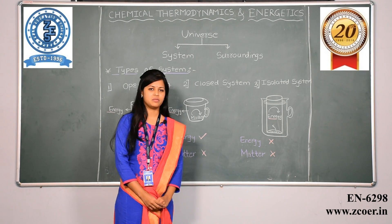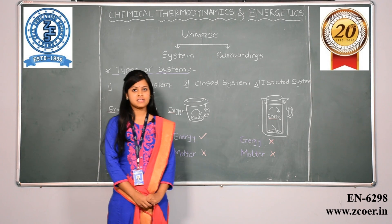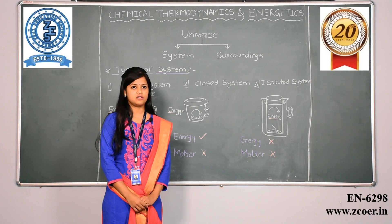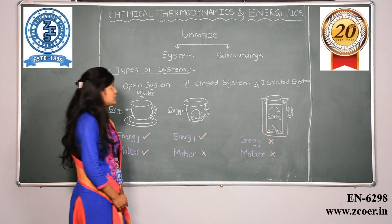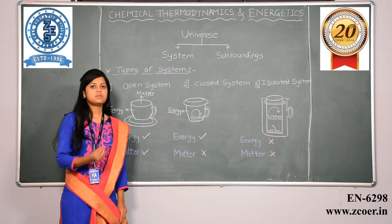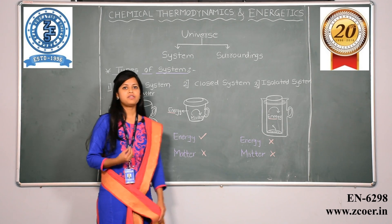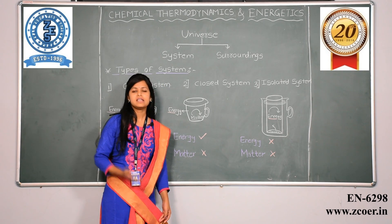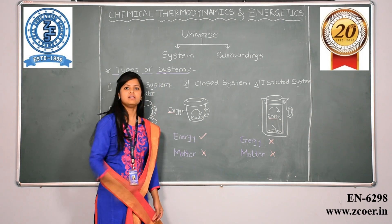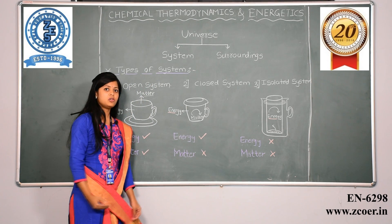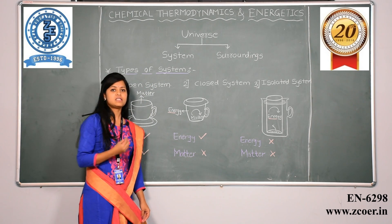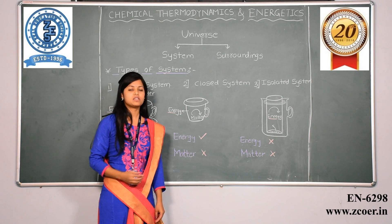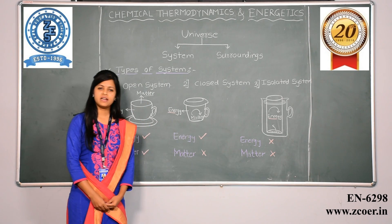Now what is the definition of thermodynamics? Thermodynamics is the branch of science where we deal with energy and the different relationships between these energy forms. Now let us look at what are the basic principles of thermodynamics. To understand that we have to first look at what is a system and what is a surrounding. Let us look at types of systems.